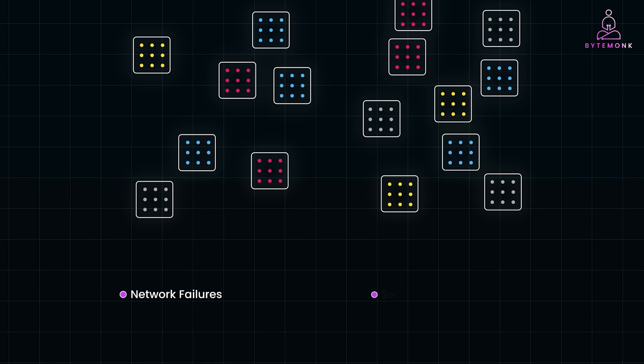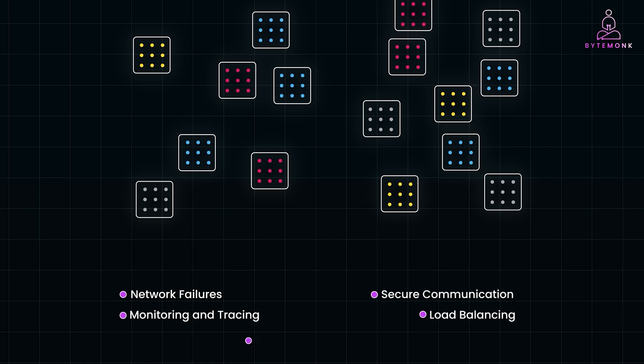Or ensuring secure communication between services, monitoring and tracing what's happening across your distributed architecture, load balancing traffic to ensure your services remain performant, or rolling out new versions of services with zero downtime. Handling these tasks manually through custom code would be inefficient and error-prone. That's why service mesh is invaluable — it provides a consistent, out-of-the-box solution to handle these challenges without having to change your service code.